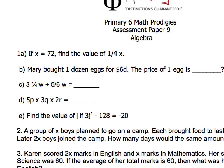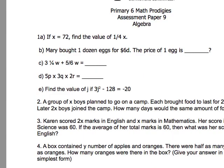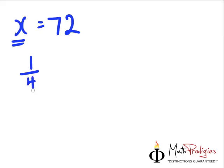The first question consists of five parts and they're all very simple. Let's take a look right now. It says here, if x is equal to 72, find the value of 1 quarter x. If x is equal to 72, find the value of 1 quarter x. Very simple. Let me just show you how to do this.